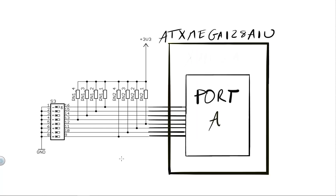Now let's think more abstractly. Imagine I have a PCB with a single ATXMega 128A1U microcontroller on it, and within that microcontroller Port A is hardwired to a set of switch circuits such as these. The question is: what if I wanted to connect more than one DIP switch package of eight switches to my microcontroller? For example, let's say I want to connect four such DIP switch packages, where one is already connected to Port A.